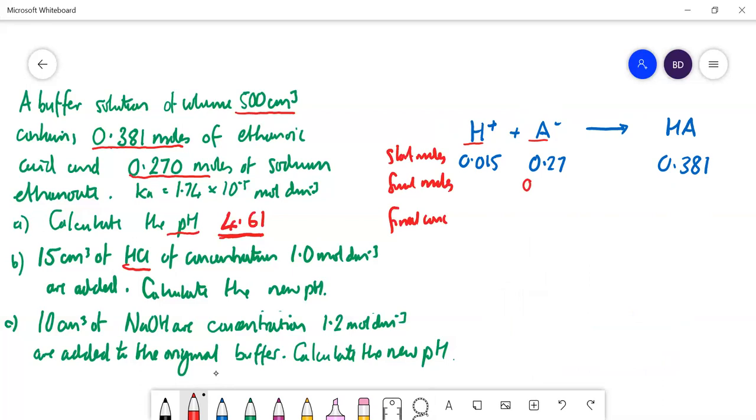So one mole of HA is going to react with one mole of A-. So that's going to go down by that much. So that's going to be 0.27 minus 0.015. That's 0.255. And this one is going to go up by that much. So I'm going to add 0.015 to that. So that takes it to 0.396 moles of that.